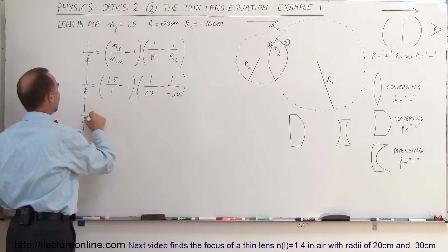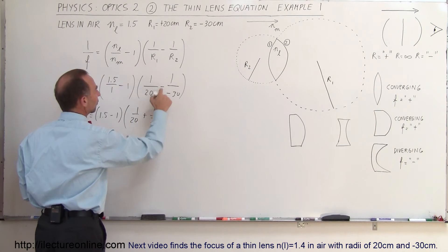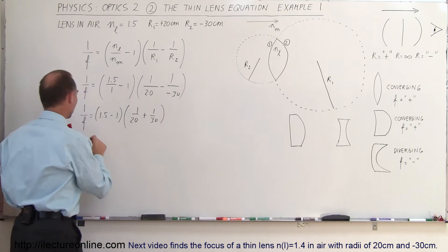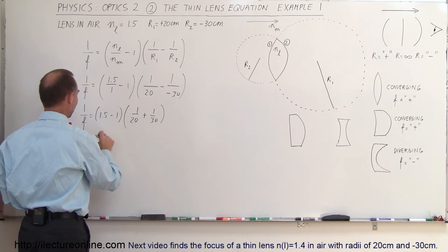So 1 over f is equal to 1.5 minus 1, times 1 over 20 plus 1 over 30, because this minus will cancel out that minus. So we have 1 over f is equal to 0.5 times...